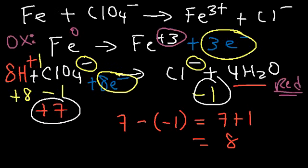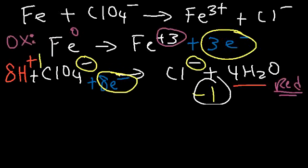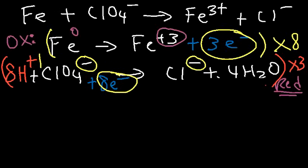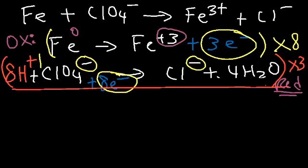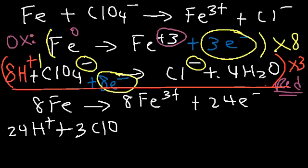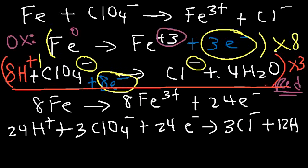Now we need to balance the number of electrons. We have three electrons in the first half-reaction and eight in the second. The least common multiple of three and eight is 24. So we multiply the iron half-reaction by eight and the perchlorate half-reaction by three. That gives us: 8Fe → 8Fe³⁺ + 24e⁻, and 24H⁺ + 3ClO₄⁻ + 24e⁻ → 3Cl⁻ + 12H₂O.